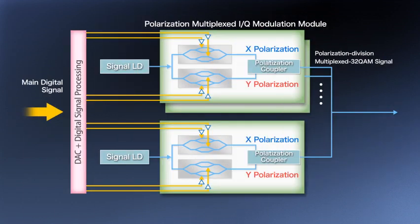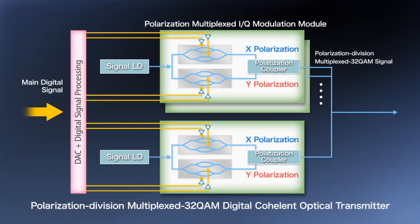The third new technology is a polarization division multiplex 32QAM digital coherent optical transmitter. This new digital signal processing scheme achieves a large capacity optical signal.